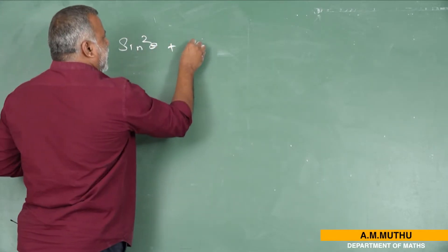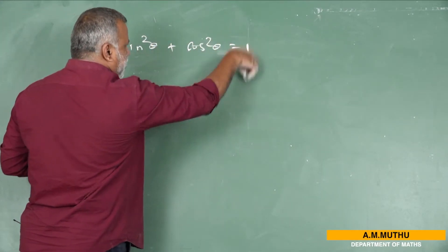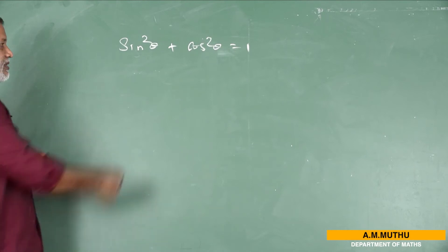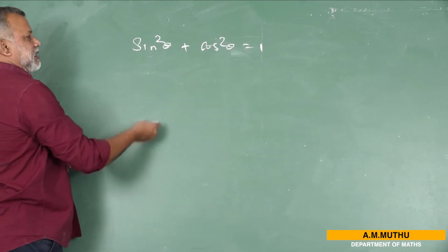sin²θ + cos²θ = 1. From this we are able to derive some sub-results.